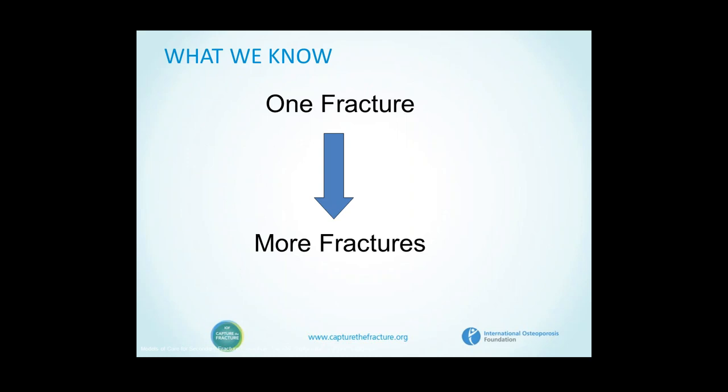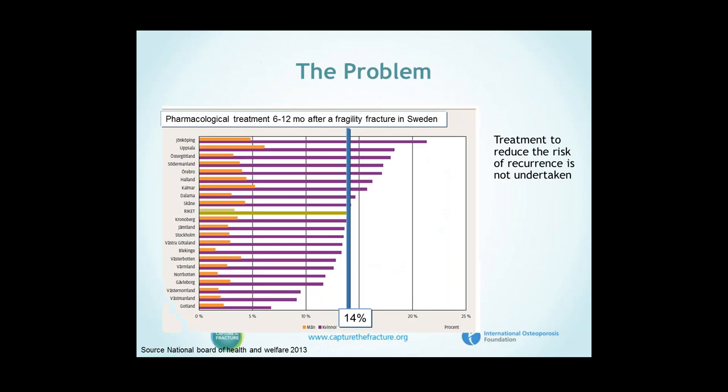What we know, and why we need fracture liaison service, is that if you have had one fracture, you are very likely to get more fractures. The problem is that too few people who have a fracture are treated to avoid new fractures. This is data from Sweden, where we have a very high incidence of fractures. The latest data shows that on average only 14% are receiving pharmacological treatment 6 to 12 months after a fragility fracture, so treatment to reduce risk of recurrence is not being undertaken.